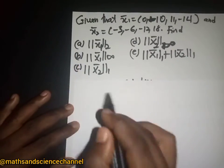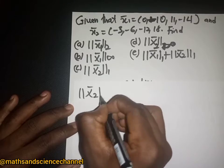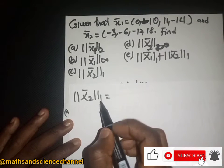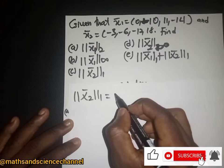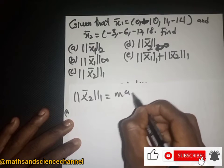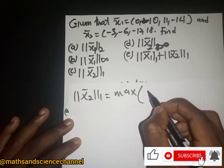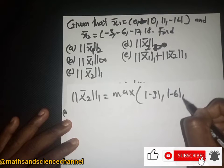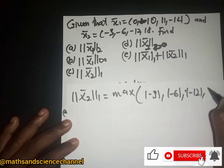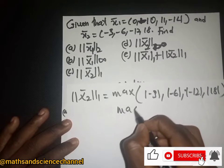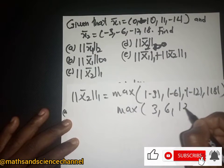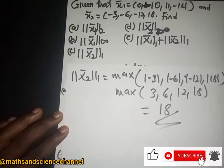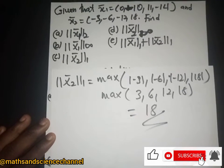Now let's look at part C. Here we have x2, and we are finding the infinity norm of x2. Taking the absolute values of (-3, -6, -12, 18) gives us 3, 6, 12, and 18. The maximum of these is 18, so the infinity norm of x2 is 18.